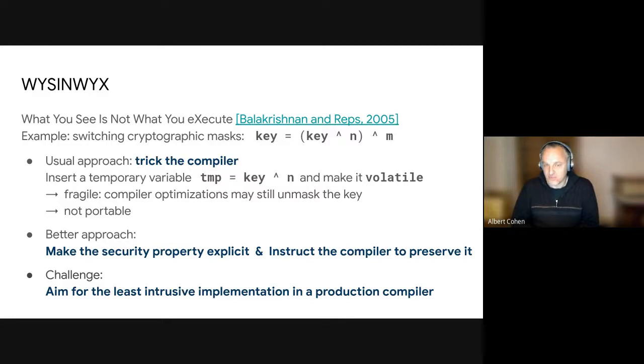And a typical approach, there are many approaches, but the typical approach is to trick the compiler. So it's not necessarily to design a new compiler from scratch or new optimization passes that would be sensitive to every single kind of security property that we care about. But it's to try to trick the compiler and live with it. For example, in this case, introducing a volatile variable may work in some cases. But as you can expect, this is fragile.